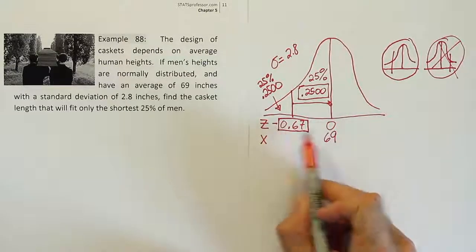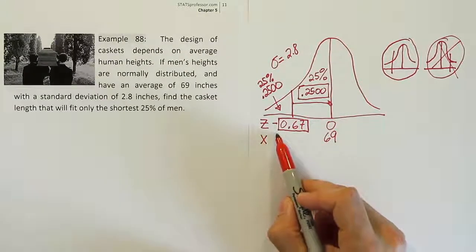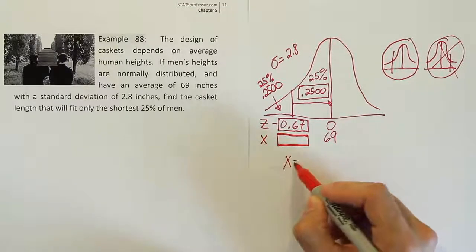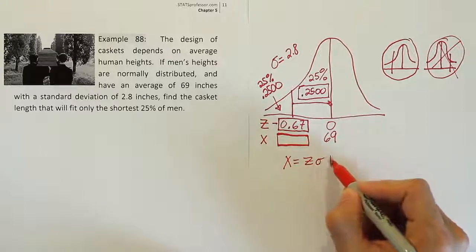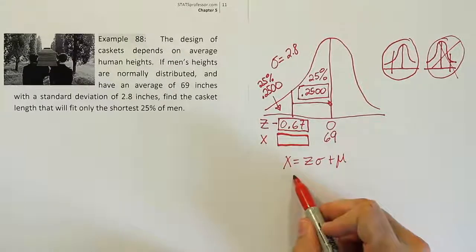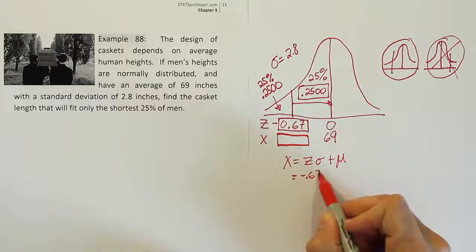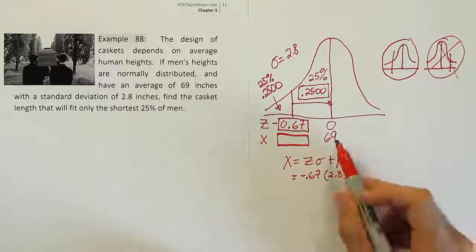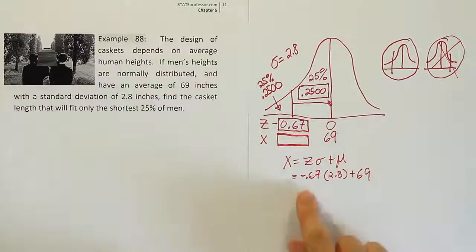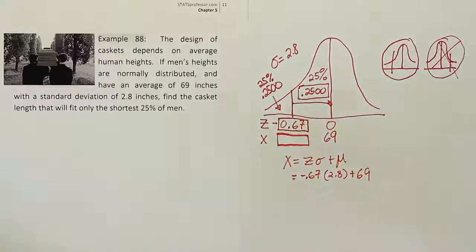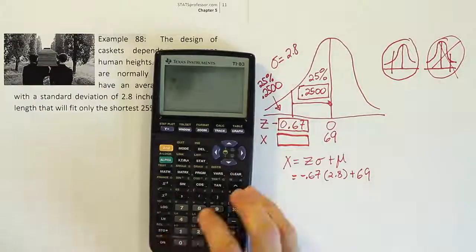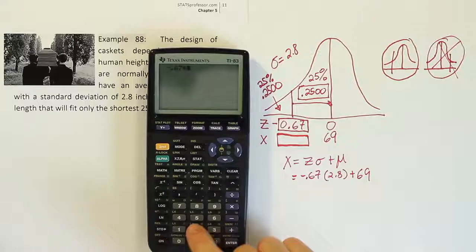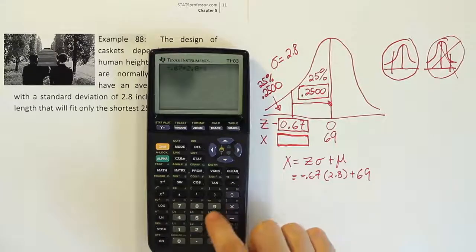And let's plug it into our formula to produce our height, our x-value. So remember, our x-value will be equal to z sigma plus the mean. For us, that's going to be .67 times 2.8 plus the mean of 69 inches. Alright, so the fact that this is negative means we'll actually be subtracting these values. Alright, so let's plug it in. We'll have .67 times 2.8 plus 69.